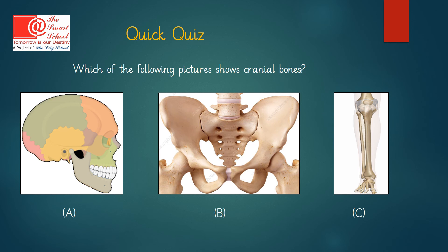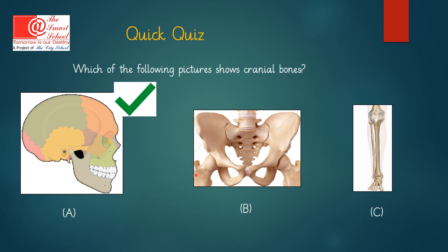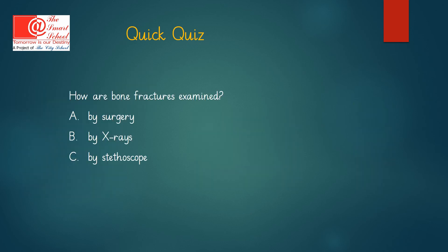We shall now go through a quick quiz. The first question is: which of the following pictures shows cranial bones — picture A, picture B, or picture C? The correct answer is picture A, which shows cranial bones. Picture B shows hip bone and picture C shows leg bone. The second question: how are bone fractures examined — by surgery, by X-rays, or by a stethoscope? The correct answer is by X-rays.